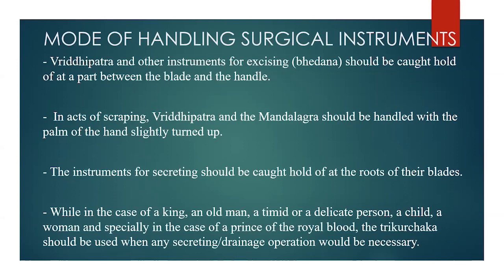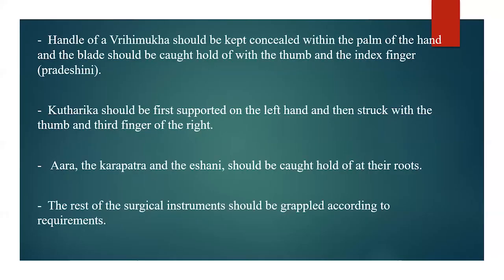In the case of a king, an old man, a timid or delicate person, a child, a woman, and specially in the case of a prince, Trikurchak should be used for any Visravan or drainage procedure that would be necessary. The handle of the Vrihimukha Shastra should be kept concealed within the palm of the hand and the blade caught hold of with the thumb and index finger, i.e., Pradeshini. Kutharika should be first supported by the left hand and then struck with the thumb and third finger of the right hand. Ara, Karpatra, and Eshani should be caught hold of at their roots.